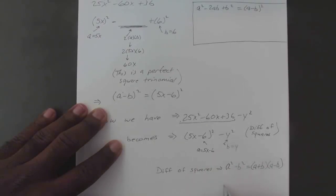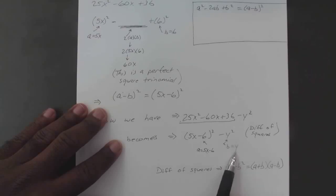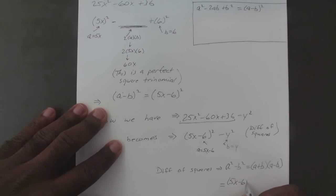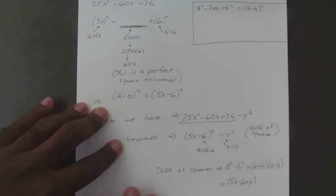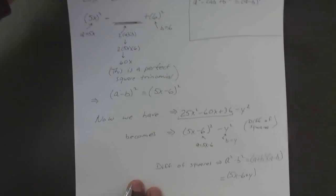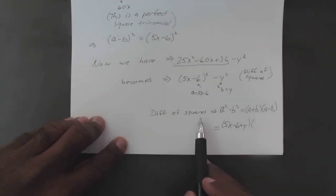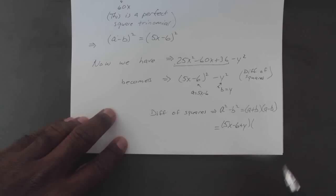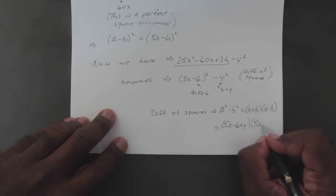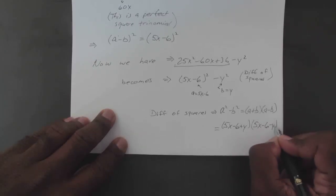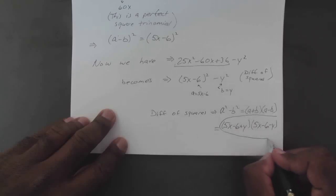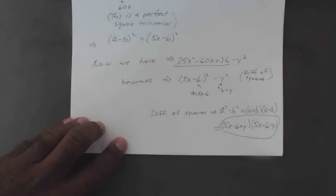So if you plug that in, a plus b becomes (5x minus 6 plus y), and a minus b becomes (5x minus 6 minus y). And that's your answer.